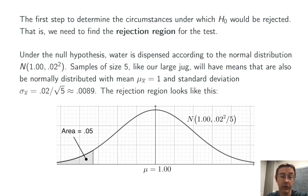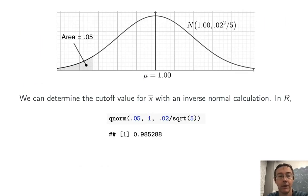So here's a picture of our rejection region. We're in a normal distribution with mean 1 and standard deviation 0.02 over the square root of 5. We're at significance level 0.05. So we're going to reject the null hypothesis when x bar lies in that gray region there on the left. What we'd like to do is to find the cutoff value, what x bar value corresponds to where that gray region starts or stops.